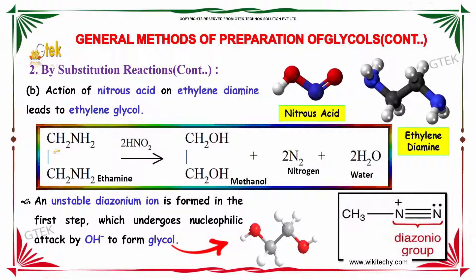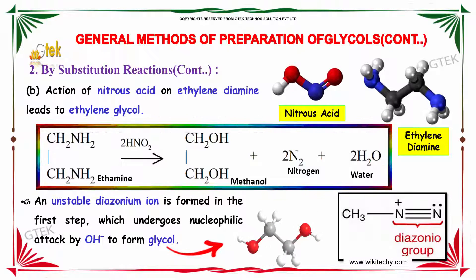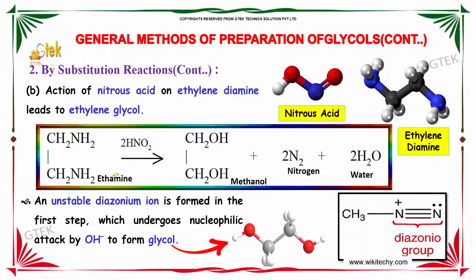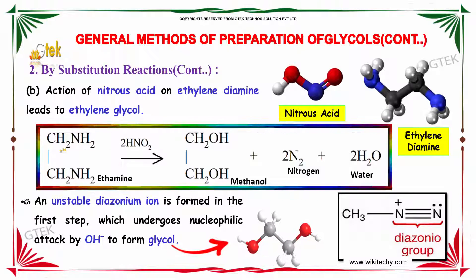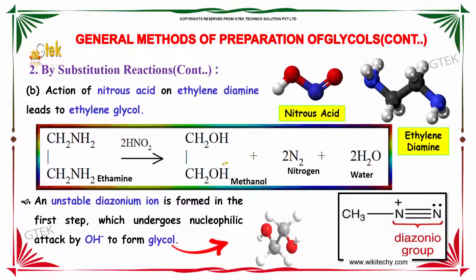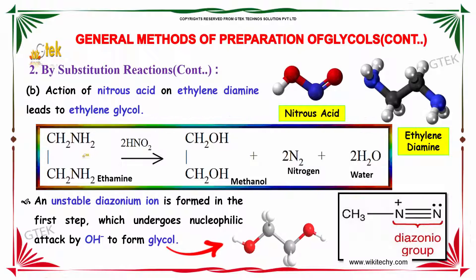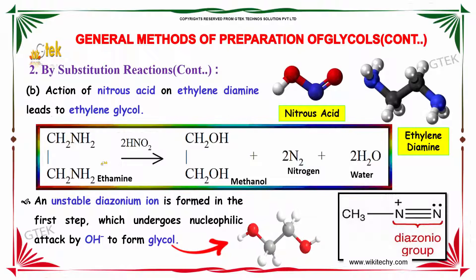The second substitution method is by the action of nitrous acid on ethylene diamine, which leads to ethylene glycol. For example, ethylamine on addition of 2 moles of nitrous acid gives methanol, with nitrogen and water as side products. An unstable diazonium ion is formed in the first step, which undergoes nucleophilic attack by OH minus to form the glycol.